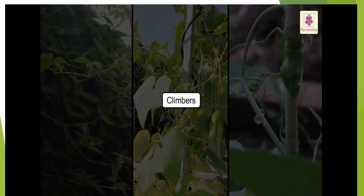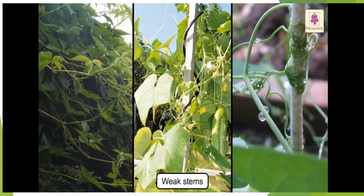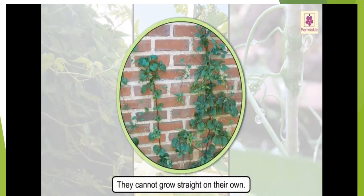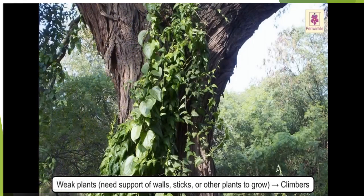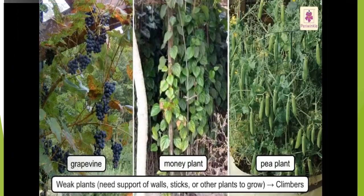Can you guess what is next? Yes, it's climbers. Climbers have weak stems, so they cannot grow straight on their own. They need the support of walls, sticks, or other plants to grow upright. For example, grapevine, money plant, pea plant, and many more.